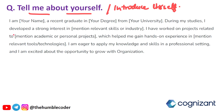Here is a sample answer: 'I am [your name], a recent graduate in B.Tech from [university]. During my studies I developed a strong interest in technologies like web development and data science. I have worked on projects related to data science, which helped me gain hands-on experience in Python and relevant tools. I am eager to apply my knowledge and skills in a professional setting and excited about the opportunity to grow with the organization.' If your percentage is less than 65-70%, no need to mention it — just mention your degree and stream.